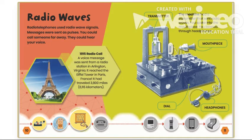Radio waves: Radio telephones used radio wave signals. Messages were sent as pulses. You could call someone far away and they could hear your voice. In 1915, a voice message was sent from a radio station in Arlington, Virginia. It reached the Eiffel Tower in Paris, France. It had traveled 3,800 miles — that's 6,115 kilometers.